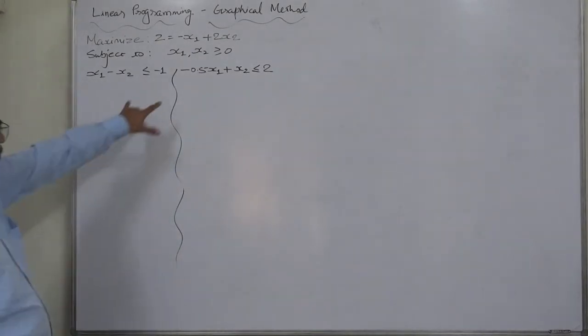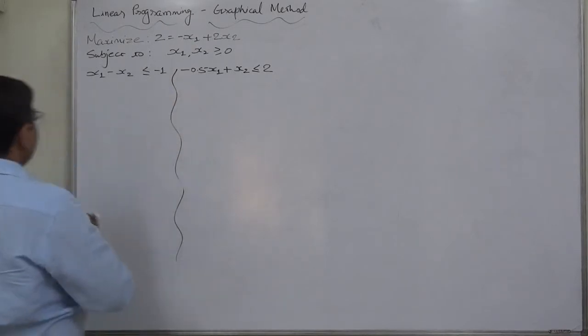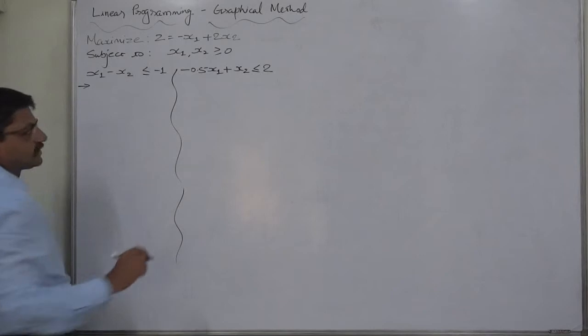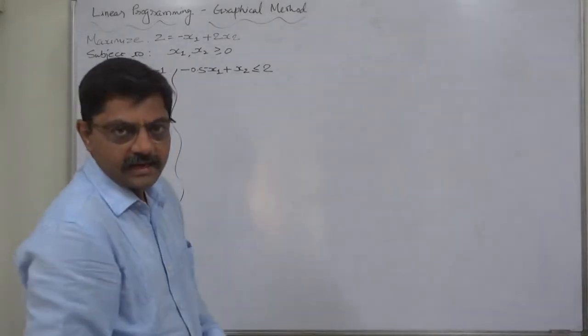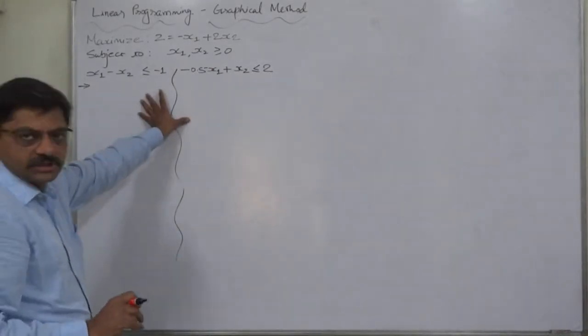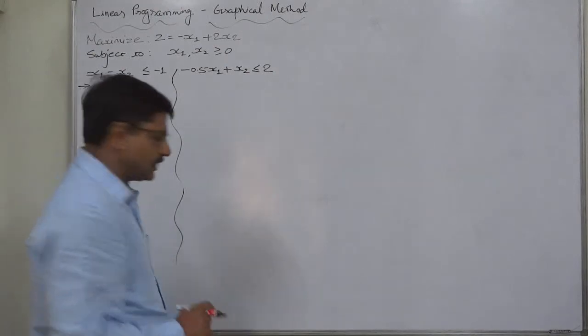Both the constraints are having negative sign in them, just be alert. As usual, as I had explained in the previous case, we are going to segregate all the constraints into two-part: equality to draw the straight line and inequality to get the feasible region.